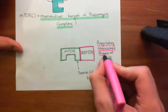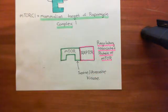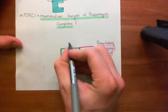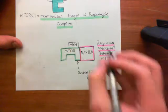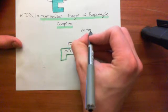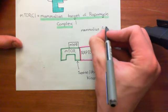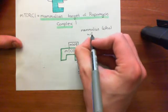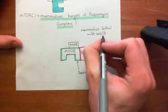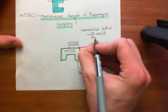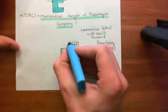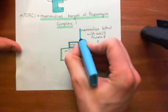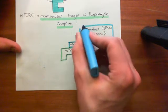Raptor is one of the subunits associated with mTOR in mTORC1. The next protein bound to mTOR is MLST8. MLST8 stands for mammalian lethal with Sec13 protein 8. The ML is for mammalian lethal, the S is for Sec13, the T comes from protein, and the 8 is for 8. So this is the mammalian lethal with Sec13 protein 8, or MLST8.